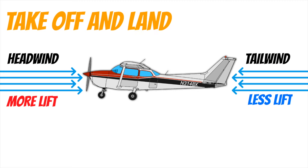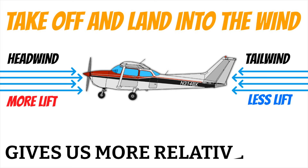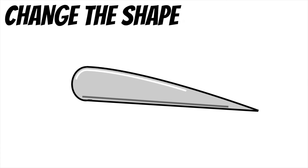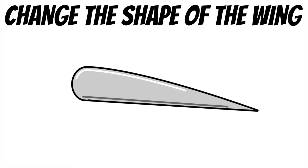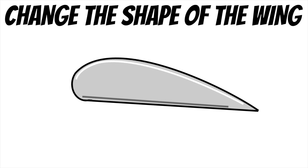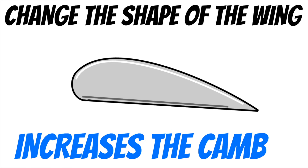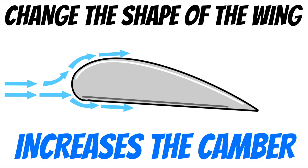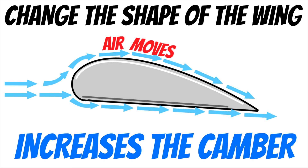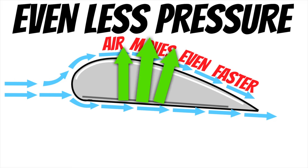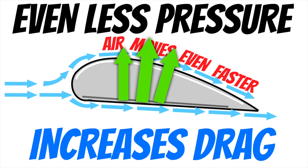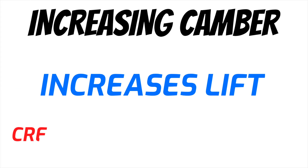This is actually one of the reasons why we take off and land into the wind — it gives us the most relative wind possible so our wings can produce plenty of lift. The other thing we can do is change the shape of the wing. This side angle view of the wing is called an airfoil, and when we change the airfoil design and make it more curved on top, this increases what we call the camber of the wing. This means the air on top has to travel a farther distance, so it must travel faster, creating even less pressure on top — which creates more lift, but also increases drag.